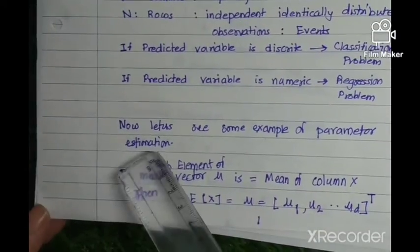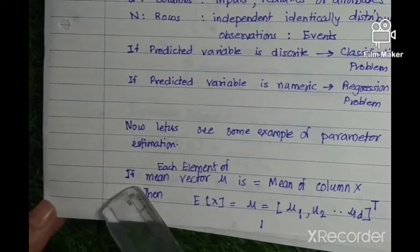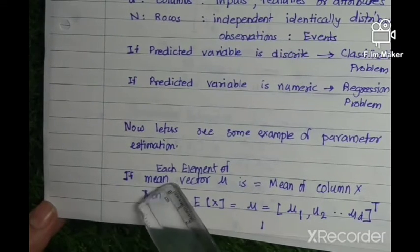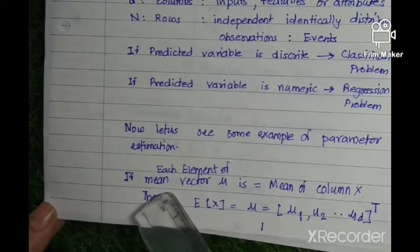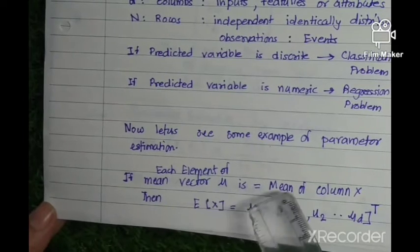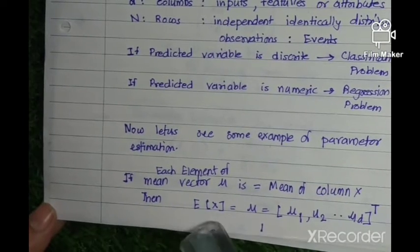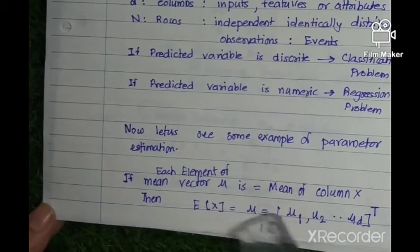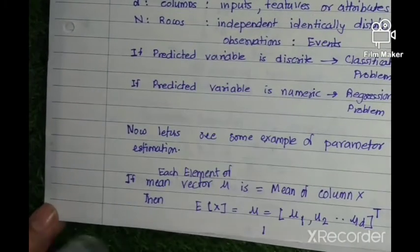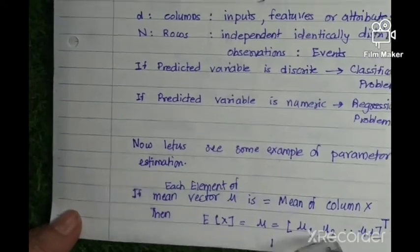Let us take an example where the mean of each vector of a particular column matrix is equal to the mean of column x. Then the expected value equals the mean for that particular matrix — we can call this the matrix mean.